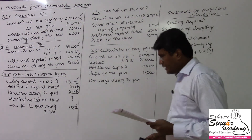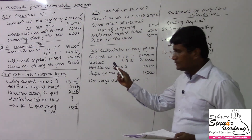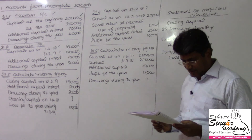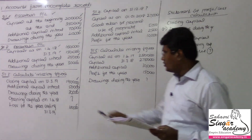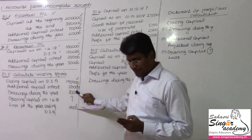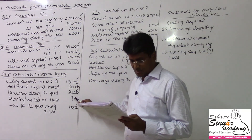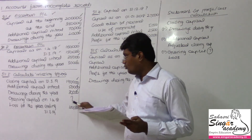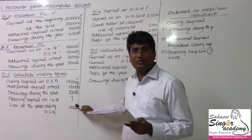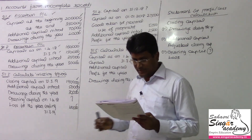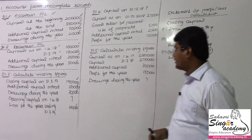Illustration 3: Calculate the missing figure. Closing capital is 190, additional capital is 50, drawings during the year are 30, opening capital is to be calculated, and the loss for the year is 40.